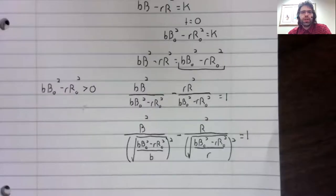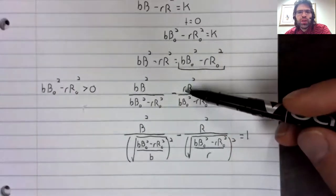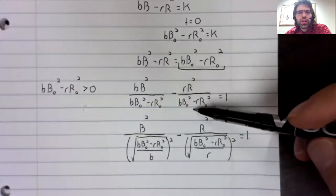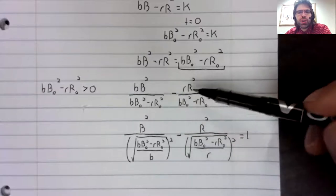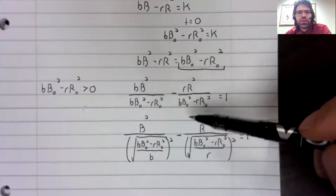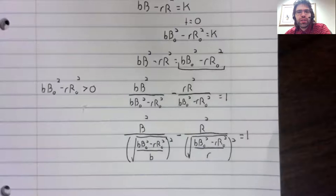Here we are. I just divided this B into the denominator, divided this R into the denominator, and rewrote these positive denominators as a square root squared. This is a hyperbola in standard form.